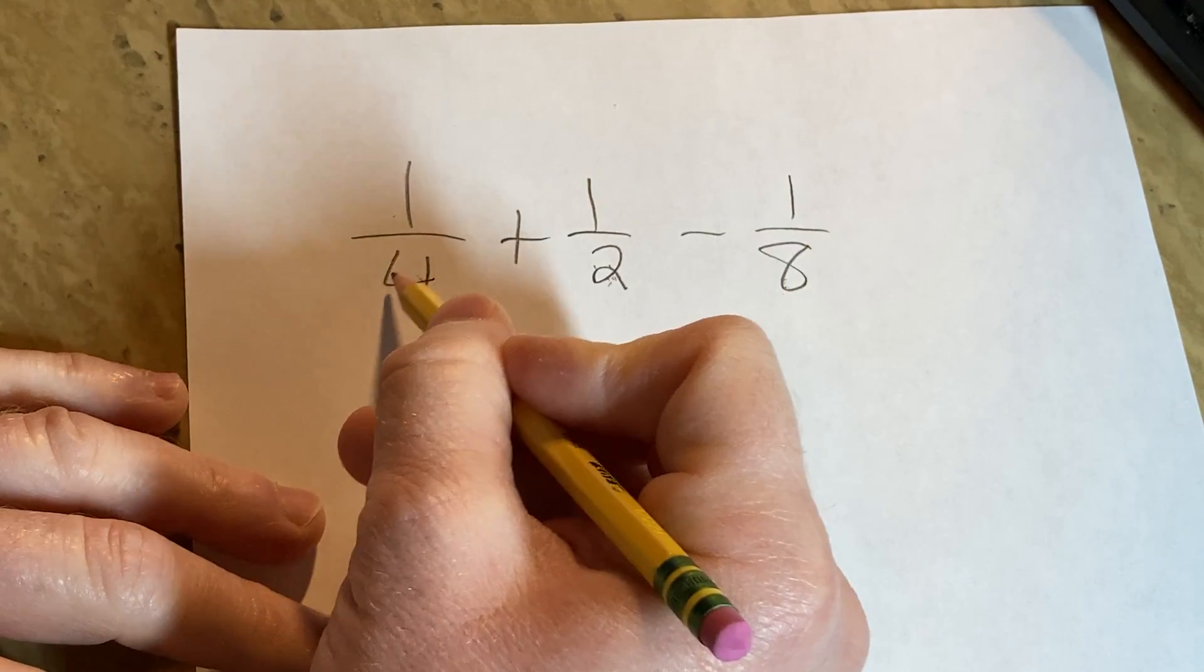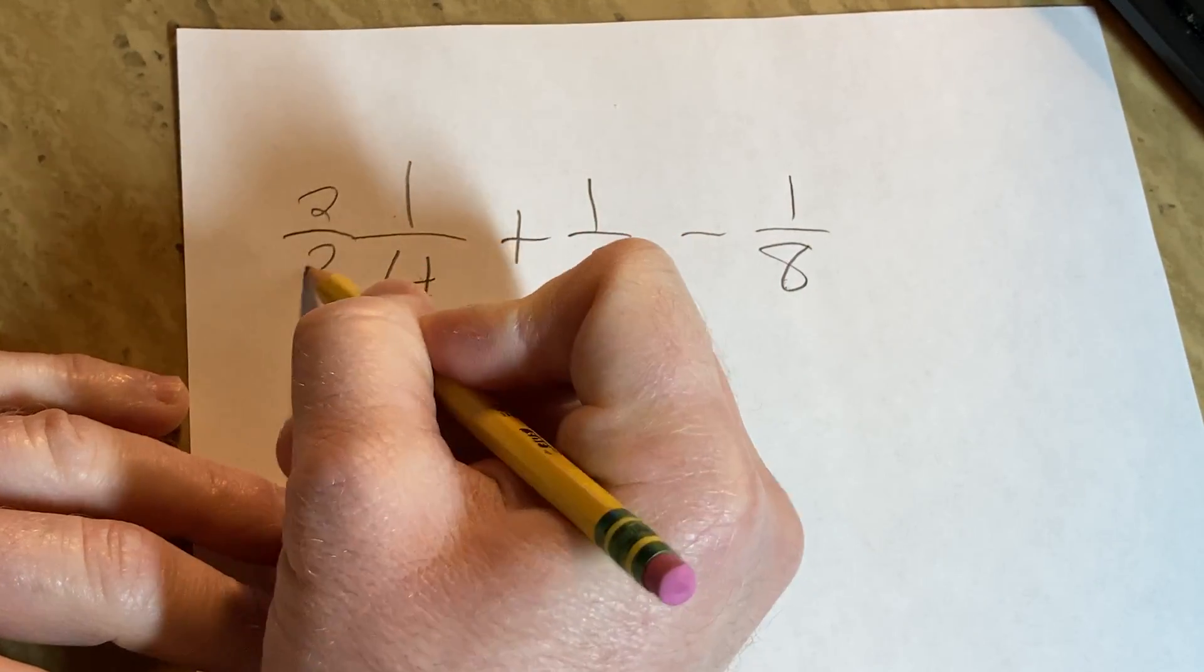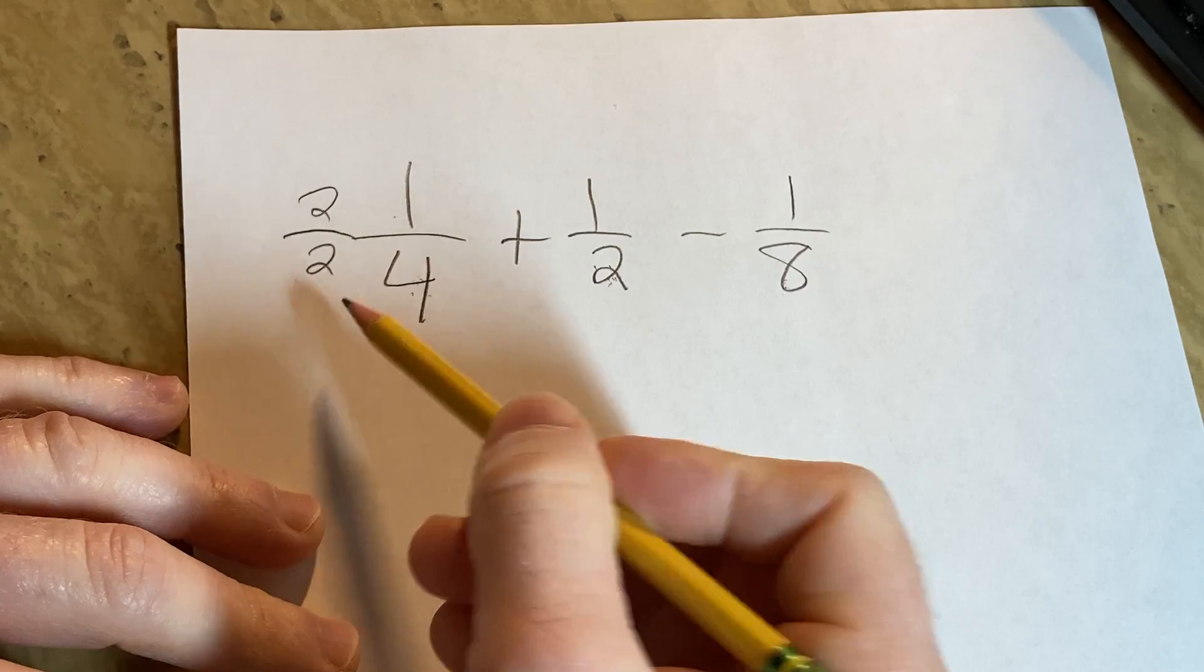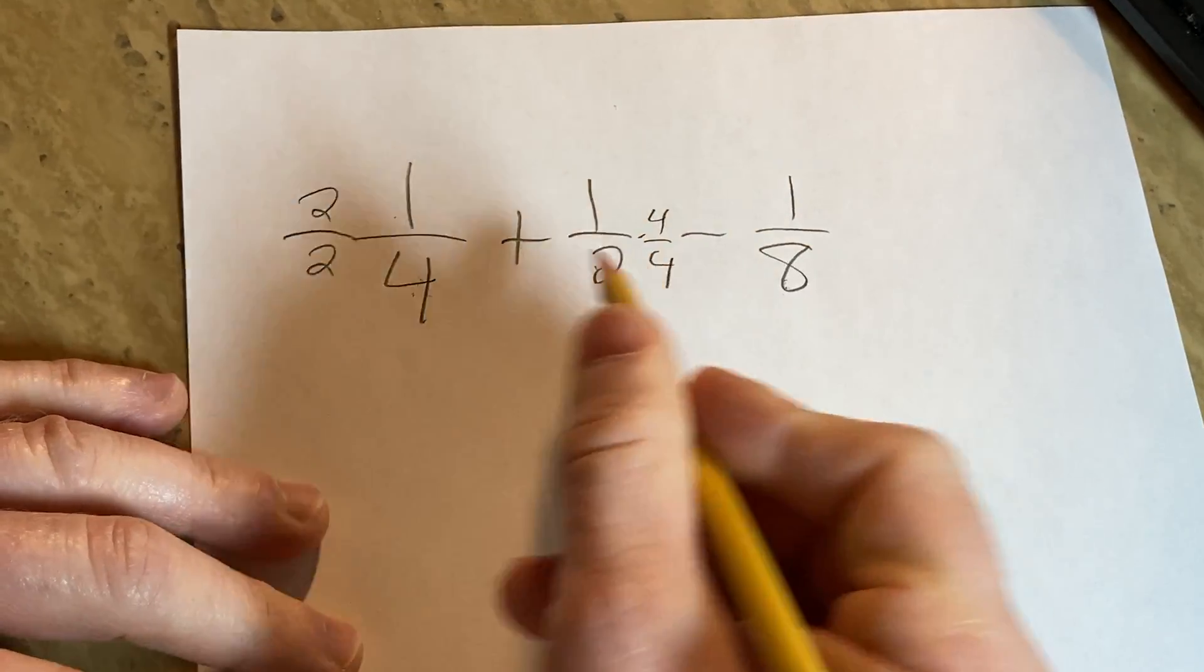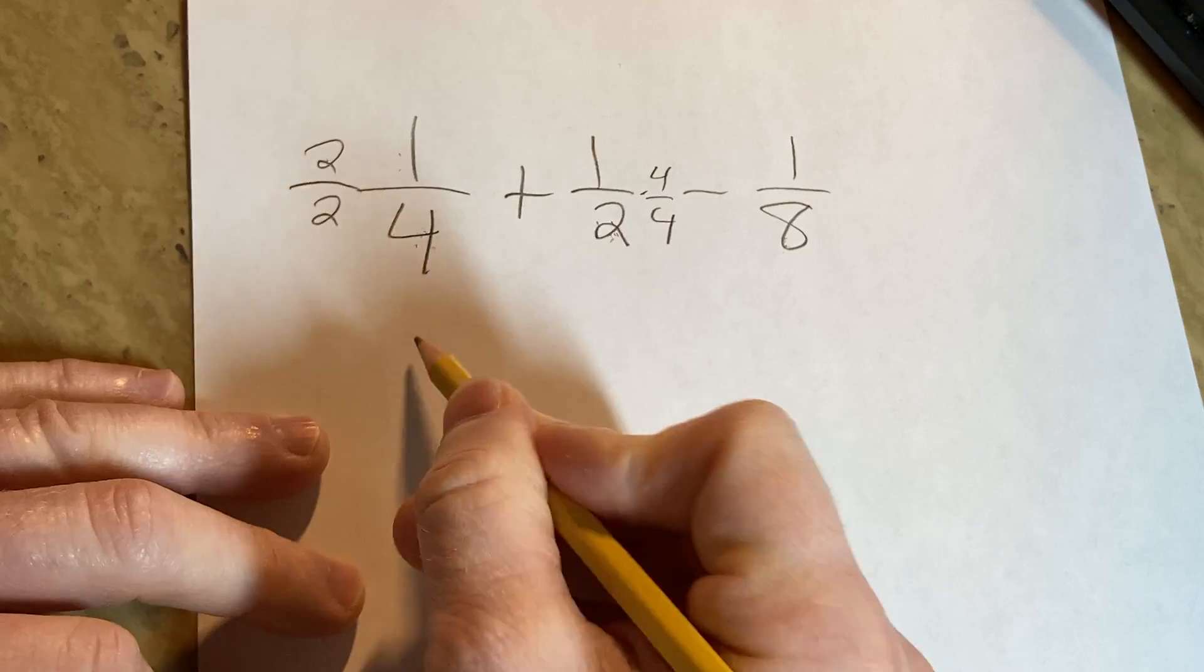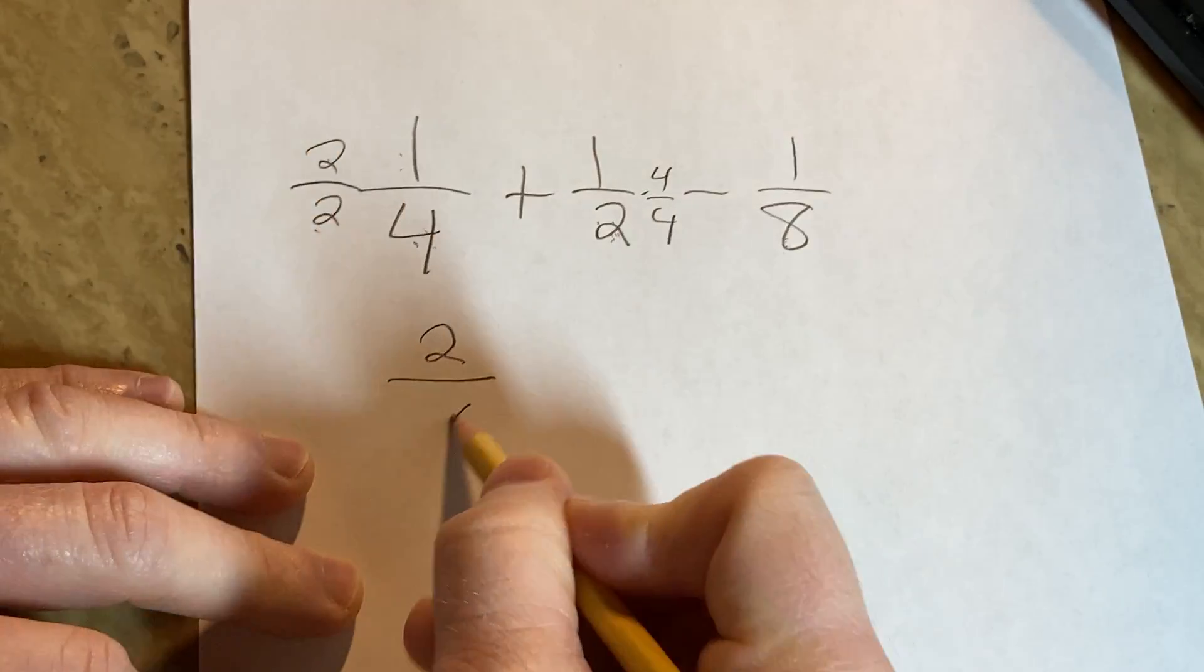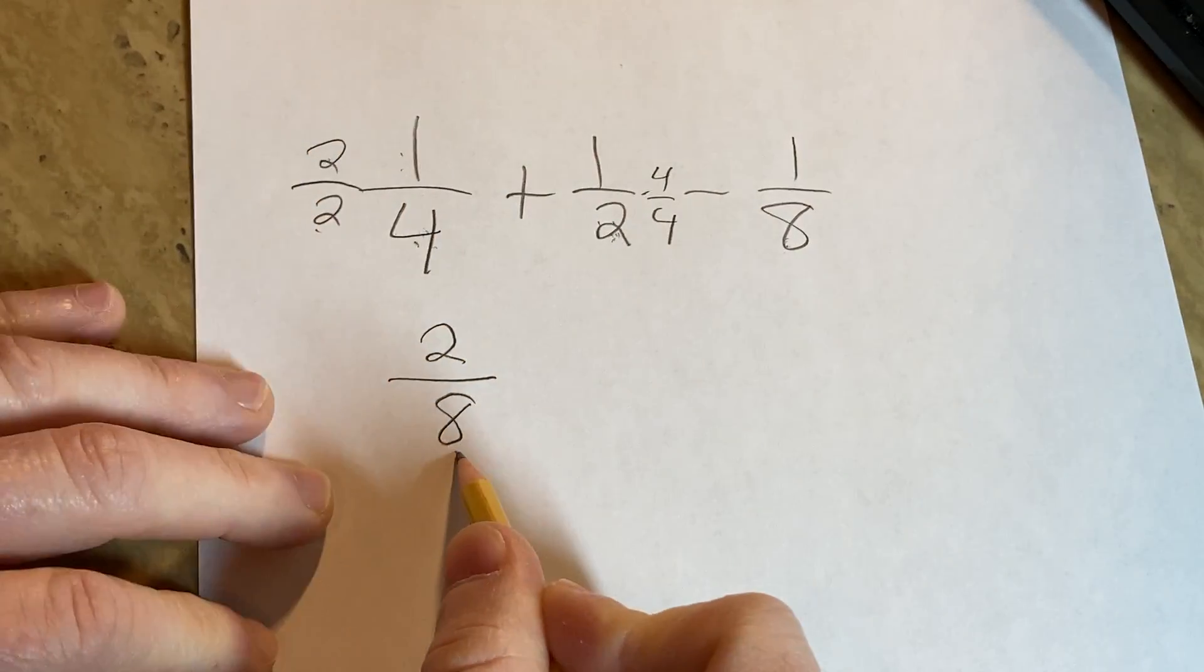So you can't just multiply by 2, but what you can do is multiply by 2 over 2. So you're basically multiplying by 1 in a really clever way. And the reason this works is now look at this. 2 times 1 is 2. 2 times 4 is 8, which is what we want, right? We want to get an 8. That's how we know.